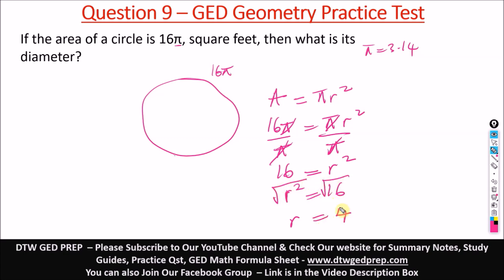So when we square root 16 we get 4. So our radius is 4. It doesn't stop there, it says what is its diameter? Don't just stop there and just pick the option 4, what is its diameter?